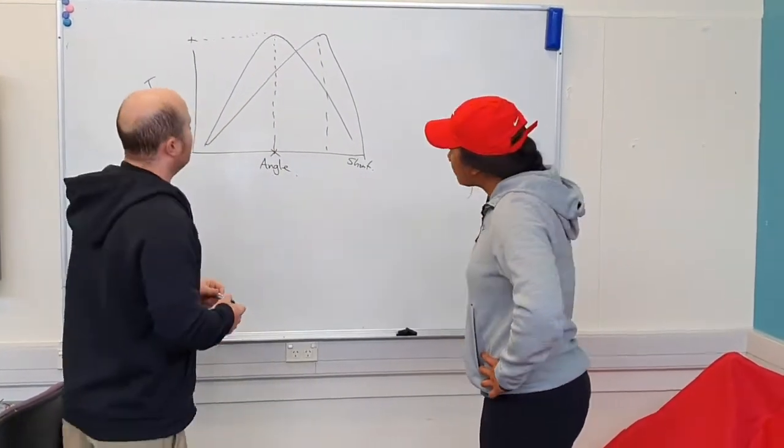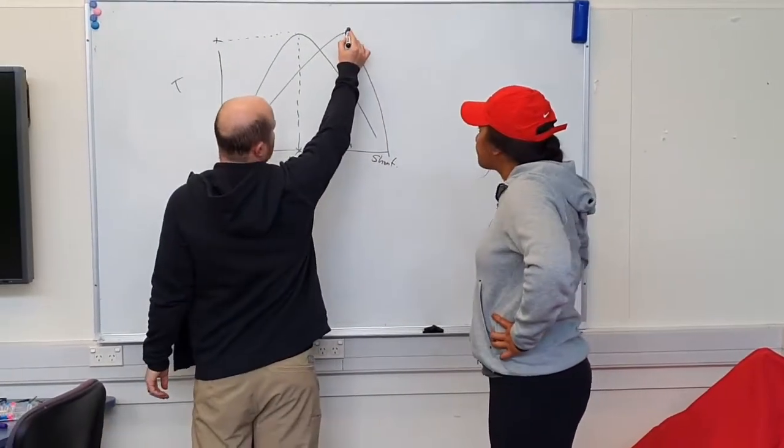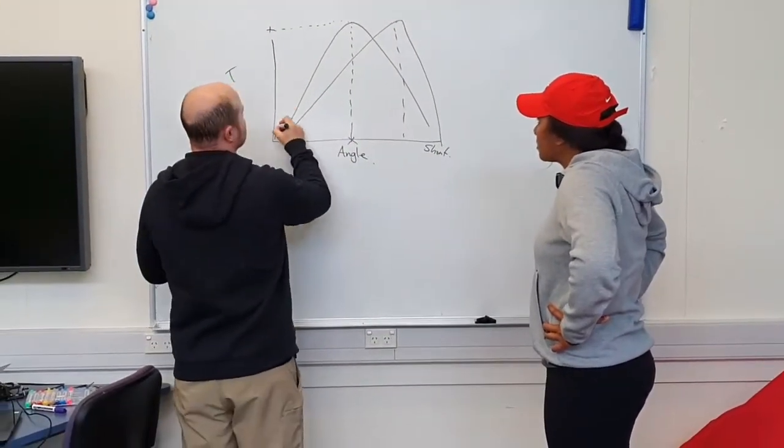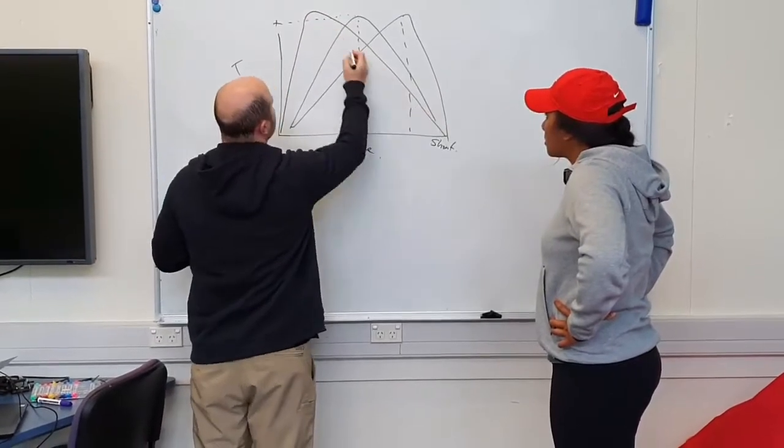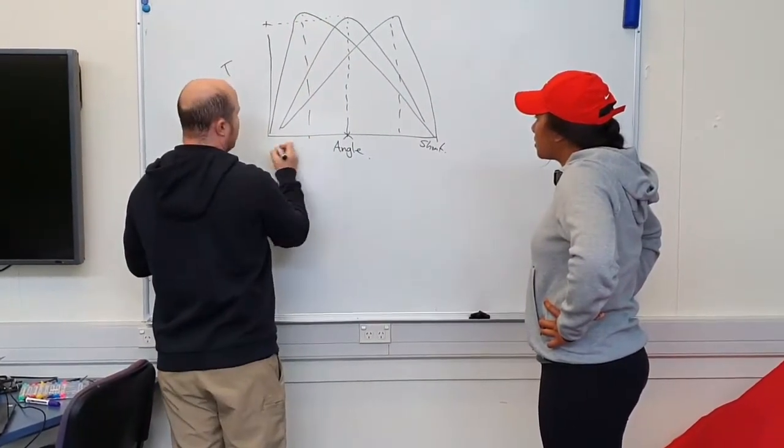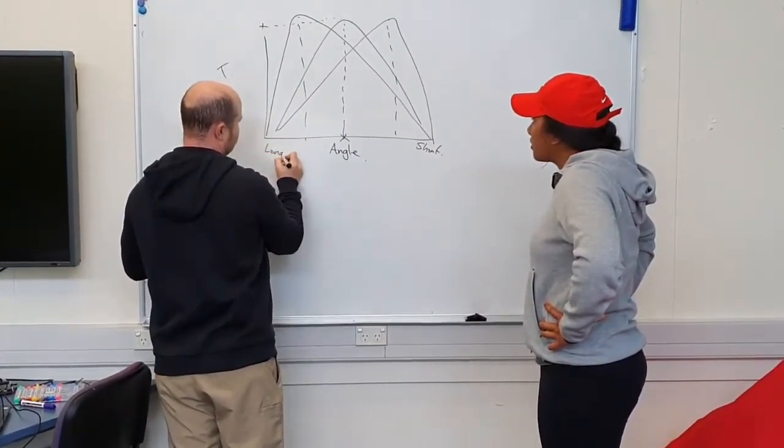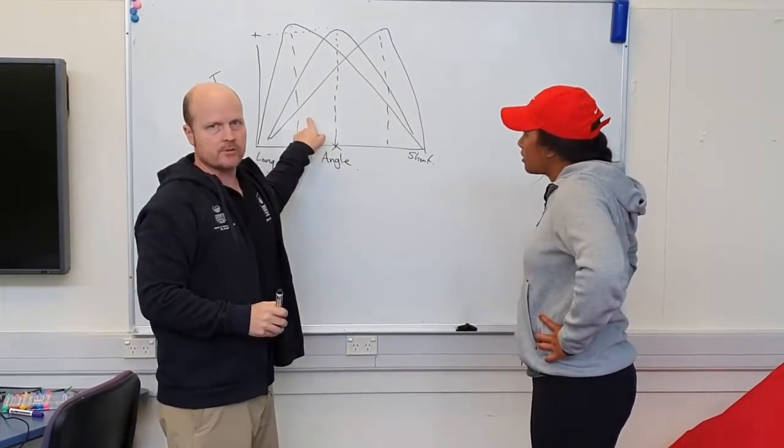So what happens is we go from our angle of peak torque here to our angle of peak torque here at long muscle lengths. So that's good for injury prevention.